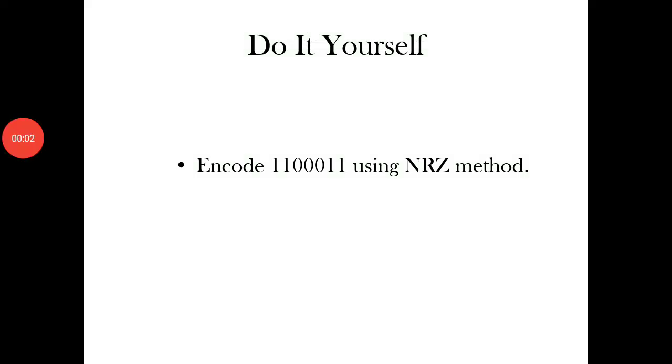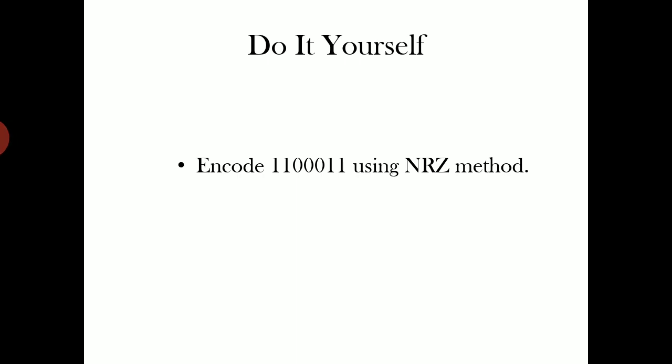Now, I have an activity for you. Encode 1100011 using NRZ method. Either encode the data as in a magnetic tape indicating the flux direction in each of the units, or indicate the saturation level of each unit as indicated in the earlier signal diagram.